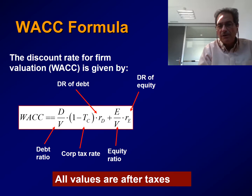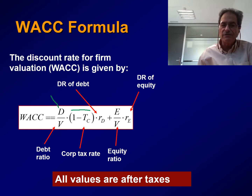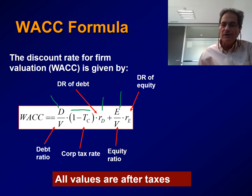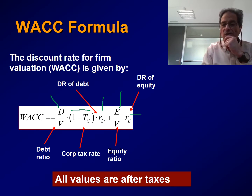As all of you probably know, the WACC formula is given by this expression. First, we have the debt ratio, which is the market value of the debt divided by the value of the firm, multiplied by 1 minus TC — which is 1 minus the corporate tax rate — and then also multiplied by RD, the discount rate of the debt. Then we add a second term: the ratio between equity and the value of the firm in market values, multiplied by RE, which is the discount rate on equity. All these values are after taxes.